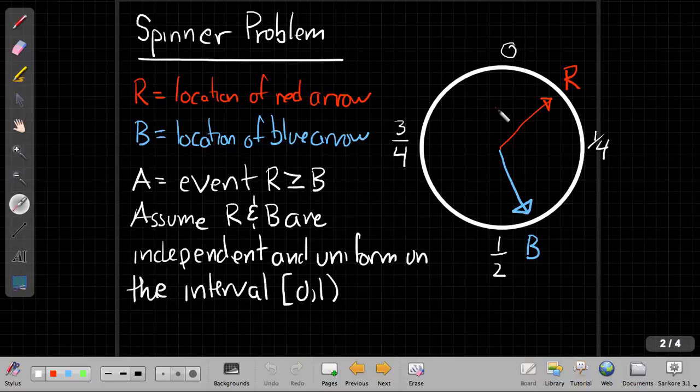Each of them are going to stop somewhere on this dial between zero and one independently of each other, so that the two spinners are decoupled enough that they just spin around, or maybe you flick them both quickly in succession. You don't know where they're going to end up.